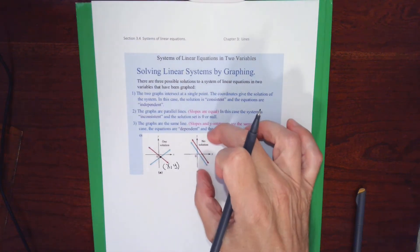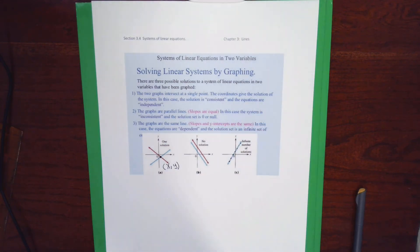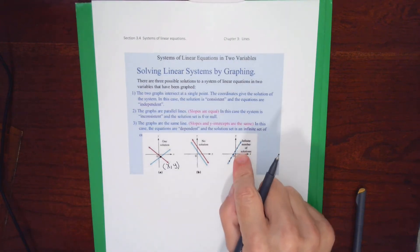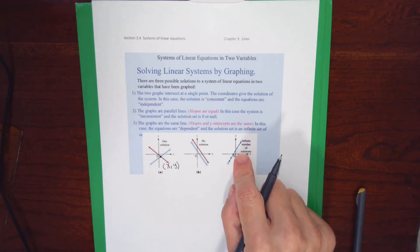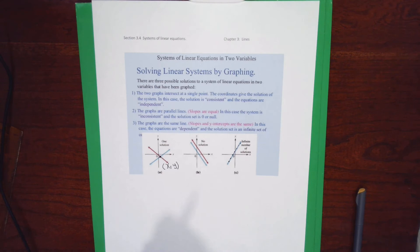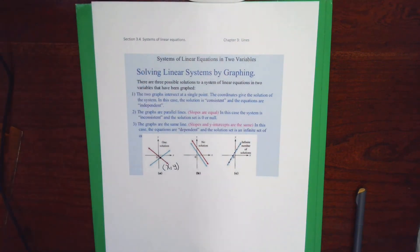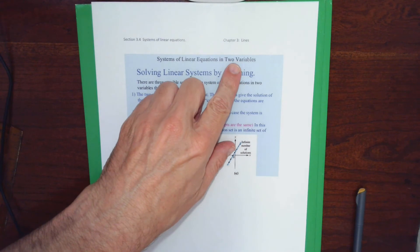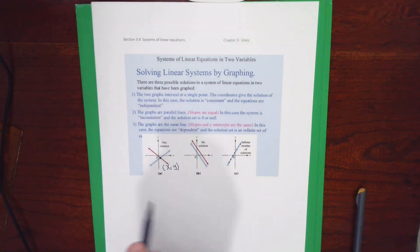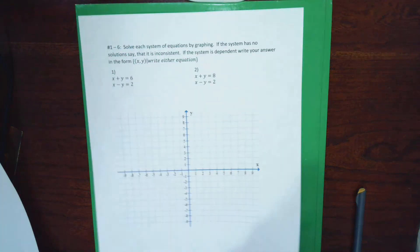Another possibility is that the lines are parallel and don't meet. A less common case is when the two lines graph on top of each other and are actually the same line. We'll go through examples of each. A system of linear equations means two equations with variables x and y — two variables — and we'll graph them, see what happens, then describe the solution.